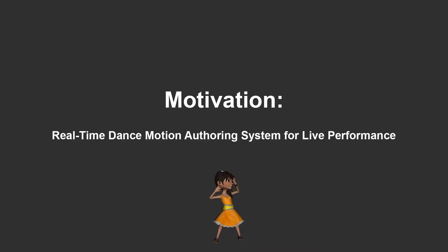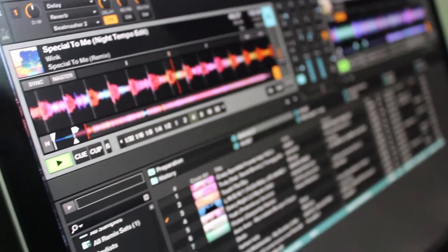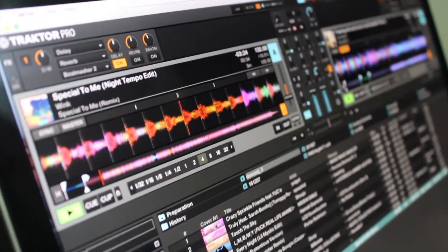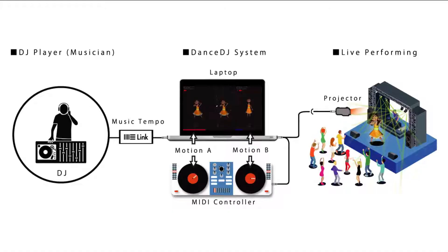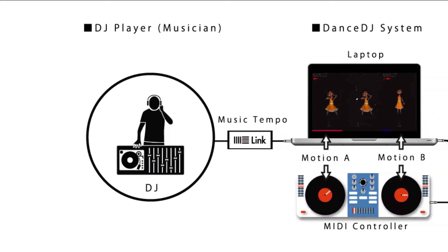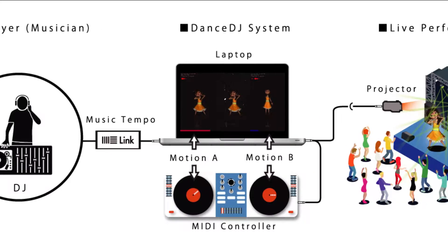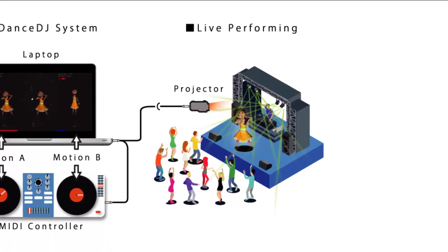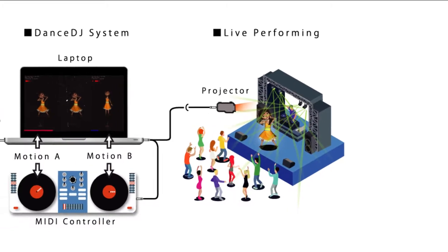Real-time dance motion authoring for live performance. Our core idea is based on a disc jockey's interaction. Like a DJ, we assume dance can be controlled from beat information. Our system for live performances has three processes. The DJ plays music and sends beat information into Dance DJ. Dance DJ allows users to synthesize continuous dance motion with the music using a DJ interface. Finally, the synthesized character's dance motion is projected on the screen using a holograph and projector.